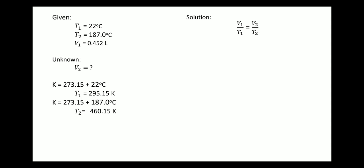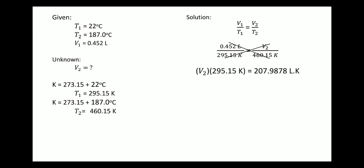Now let's solve. Substituting the values: 0.452 liter over 295.15 Kelvin is equal to V2 over 460.15 Kelvin. Cross-multiply: copy 295.15, then V2, then multiply 0.452 times 460.15. The answer is 207.9878 liter·Kelvin.